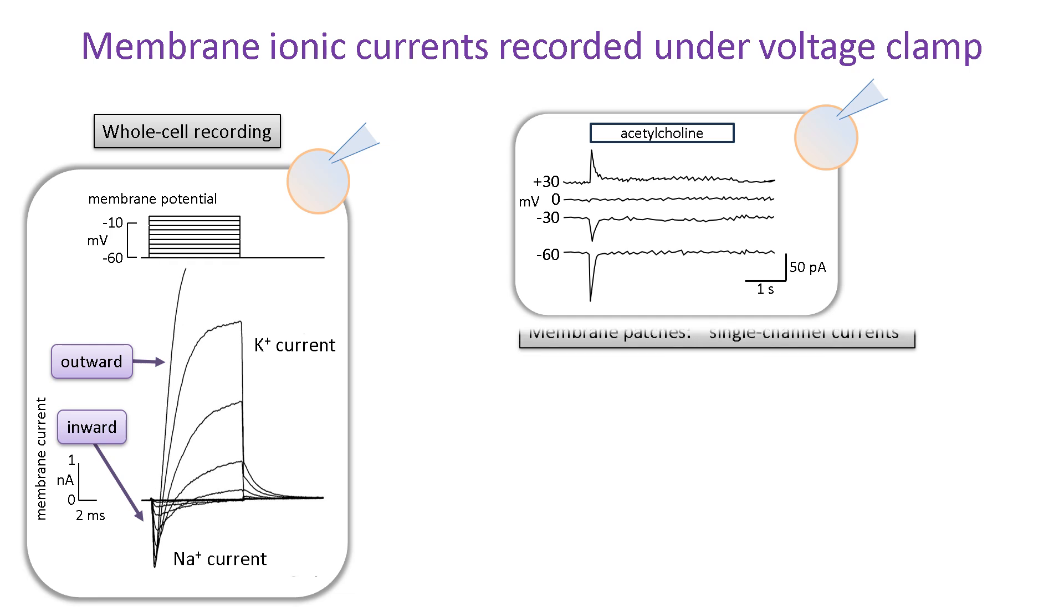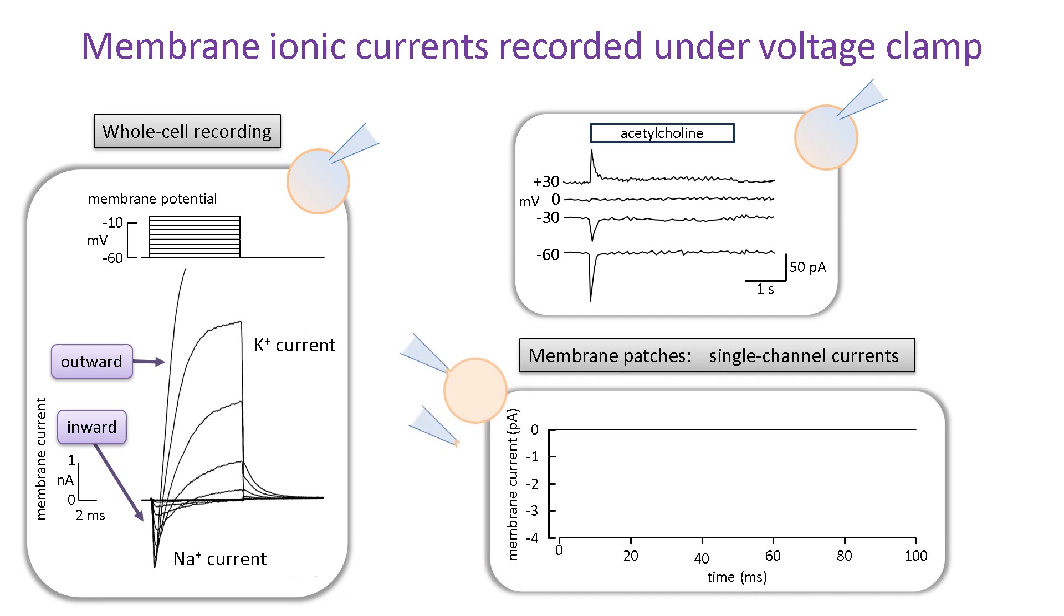Patch clamping allows us to record the current flowing through an individual ion channel in a patch of membrane isolated at the tip of a micropipette. Think about it. It's the flux through a single protein molecule seen in real time. This is a typical record of current flowing through a single channel. When the channel is closed, the current is zero. During continuous recording, the channels flip back and forth between the closed and open states. This is seen as brief pulses of current that last so long as the channel is open. The currents always go to the same level when the channel is open. That level depends on the rate of flow of ions through the open channel or the channel conductance.